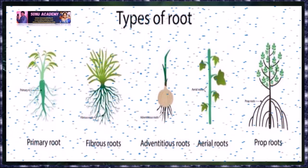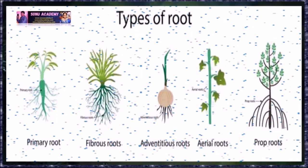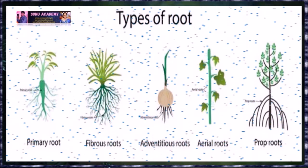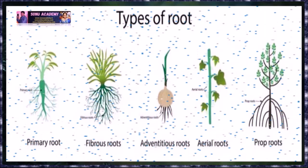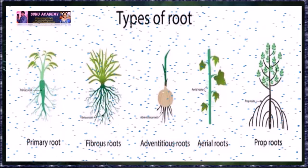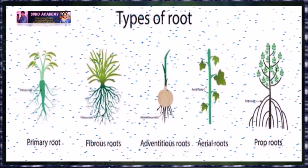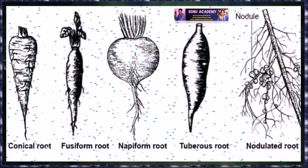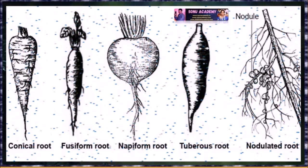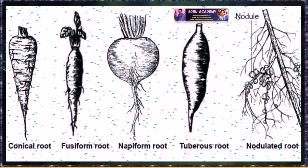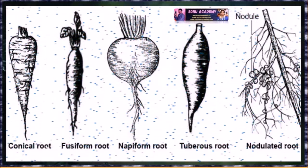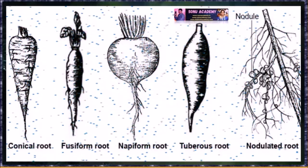Types of roots: There are 5 types of roots mainly — these are primary roots, fibrous roots, adventitious roots, aerial roots and prop roots. Examples of tap root modifications are conical roots, fusiform roots, napiform roots, tuber roots, and nodulated roots.